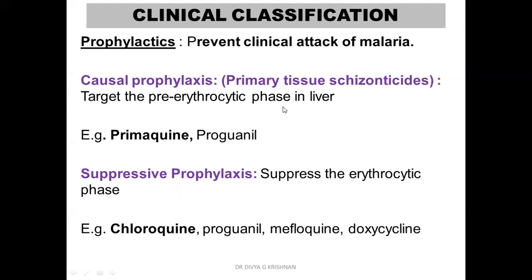The clinical attack occurs when merozoites are released into the blood — causal prophylactics prevent this. Then suppressive prophylactics suppress the erythrocytic phase — the main one is chloroquine. So under causal prophylactics you have primaquine, and under suppressive prophylactics you have chloroquine.